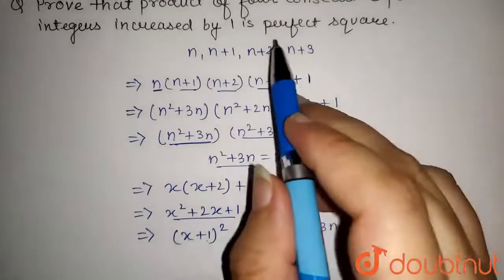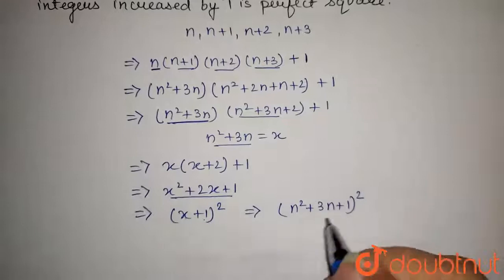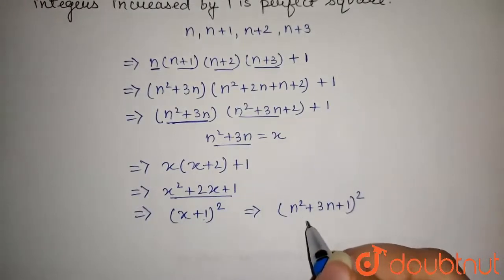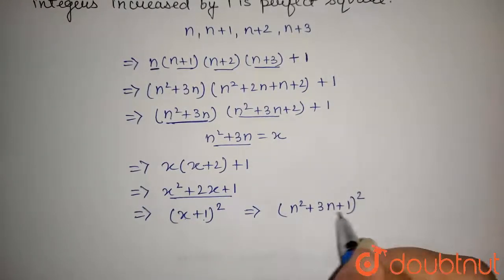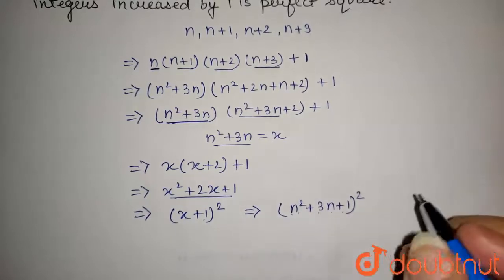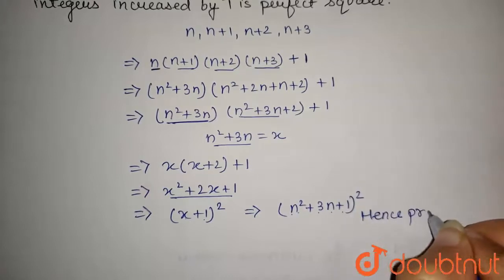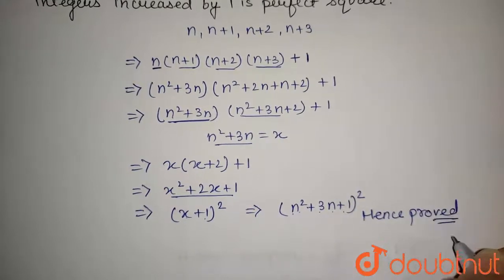Now, we have to prove that this is perfect square. So, now, as this is the square of n square plus 3n plus 1, so this is a perfect square, hence proved. So, this is the answer of this question. Thanks for watching.